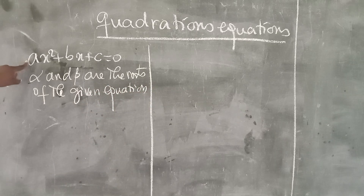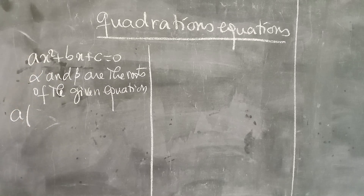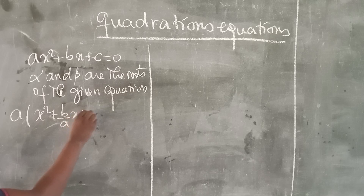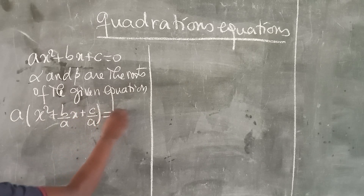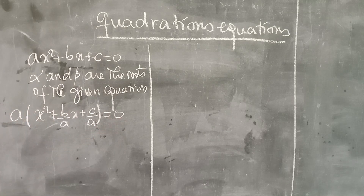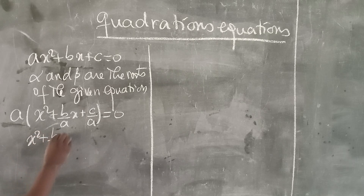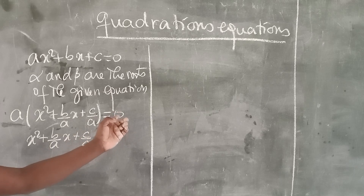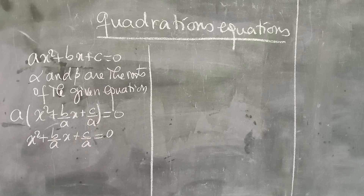Simply, this equation becomes: we factorize by a here, take a out and stay with x² + b/a·x + c/a = 0. Equating this to zero, we divide by a everywhere, on the left or right. We stay with x² + b/a·x + c/a, and dividing through, we stay with zero.